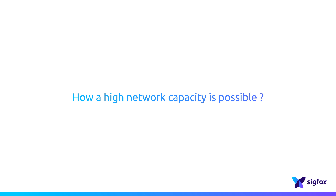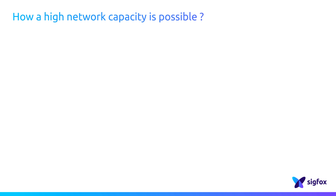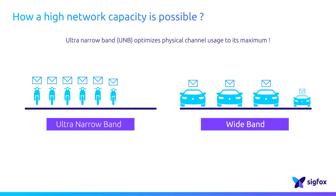Ultra-narrow band radio technology generates a narrower radio signal. Having the same playground — the same amount of bandwidth to carry signals, let's call it a macro-channel — the advantage of UNB is the greater number of signals that can be carried at the same time.